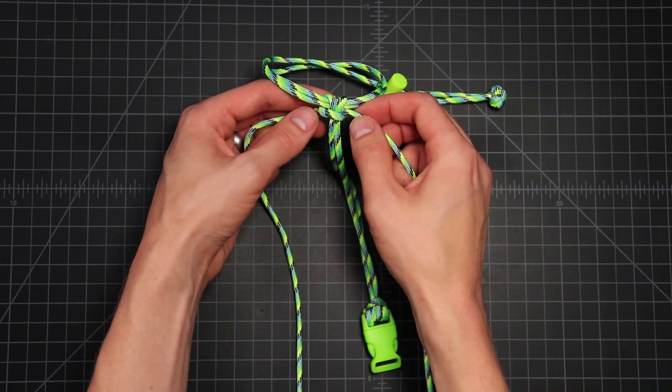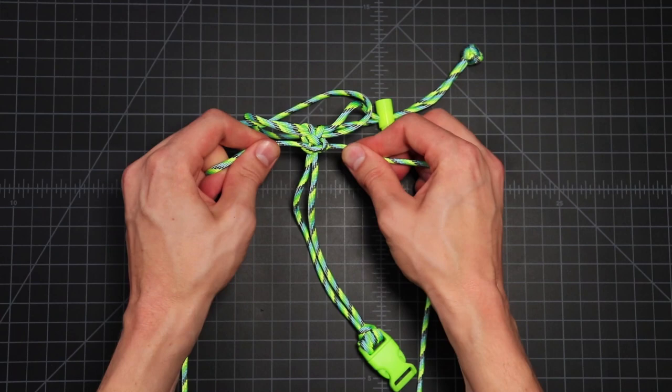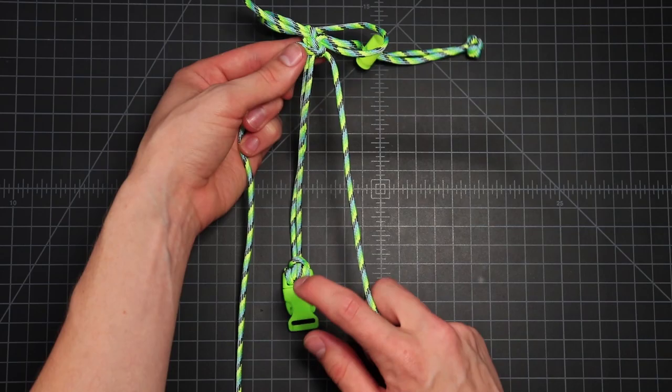Now we did left over the top, right over that and then underneath and through the loop. I'm just going to keep on doing this until I get to my buckle and then I'll show you how to attach the buckle end to the neck strap.